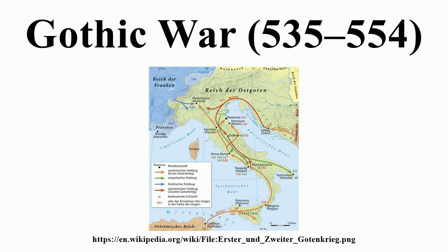The Gothic War between the Eastern Roman Empire and the Ostrogothic Kingdom of Italy was fought from 535 until 554 in Italy, Dalmatia, Sardinia, Sicily and Corsica.